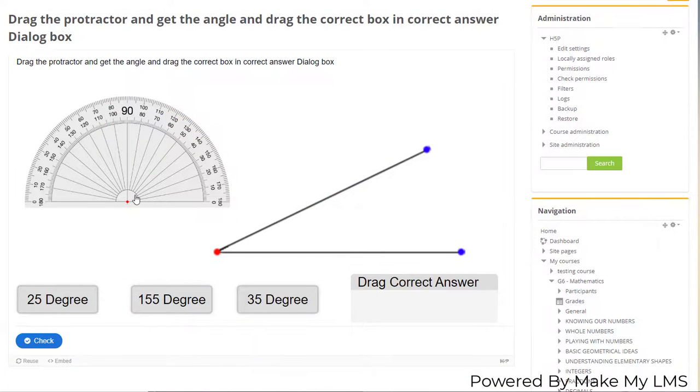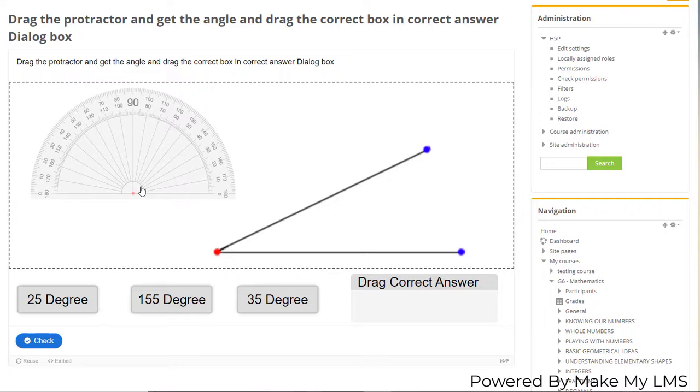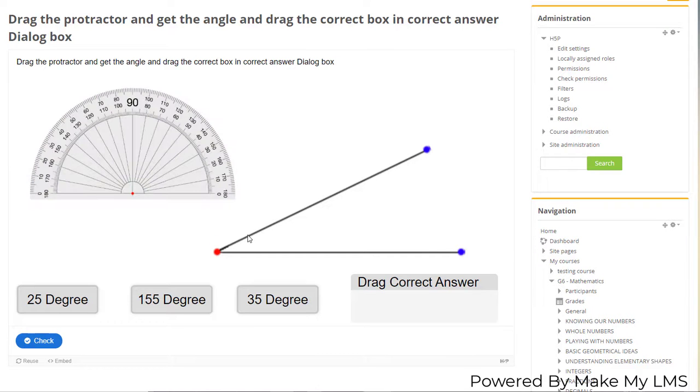For example, let's see how to use a protractor to get the angle between two intersecting lines. Now we have a protractor on our screen and two intersecting lines.